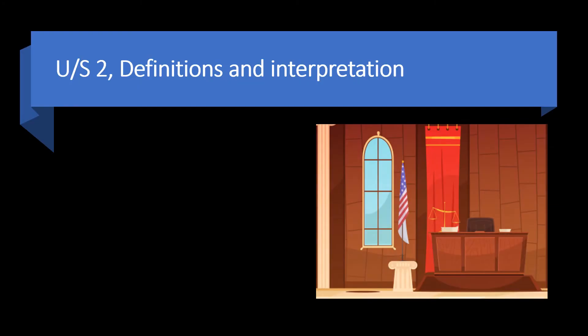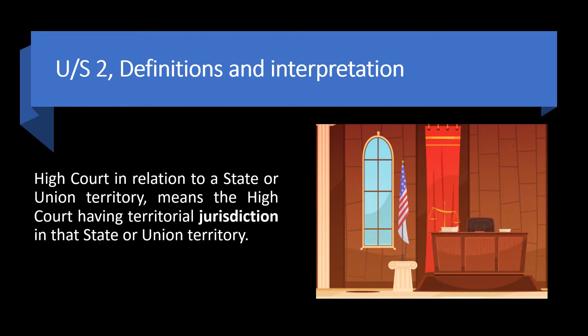Now we will briefly look into the sections of the Patent Act where the term jurisdiction has been used. Under Section 2, definitions and interpretation, the term 'High Court' has been defined. According to this definition, High Court in relation to a state or union territory means the High Court having territorial jurisdiction in that state or union territory. For example, the Delhi High Court has territorial jurisdiction to deal with cases in Delhi only.